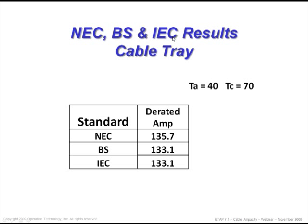For this cable tray comparison, we've set the ambient at 40°C and the conductor temperature at 70°C — limited because of splicing, termination, or similar constraints. The ampacity across all three methods comes out very close to each other. In this particular case, BS and IEC give identical results, while NEC gives you a little bit more current.